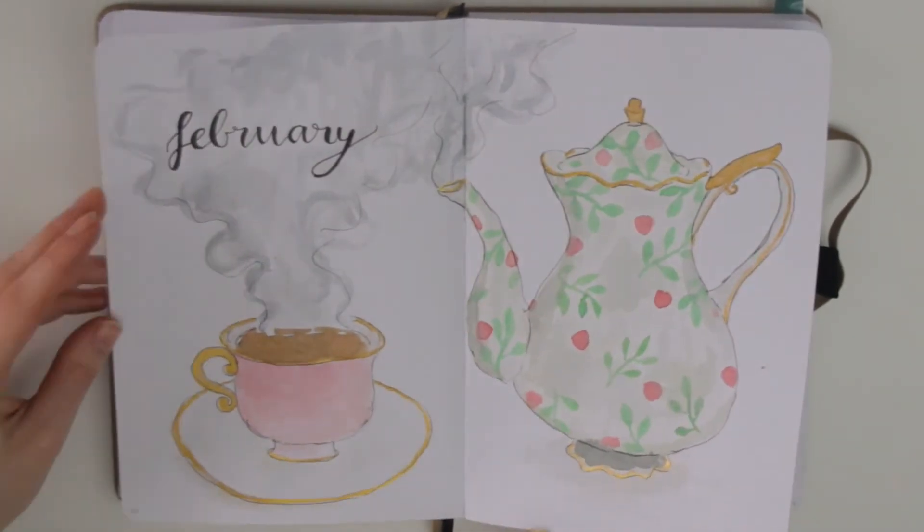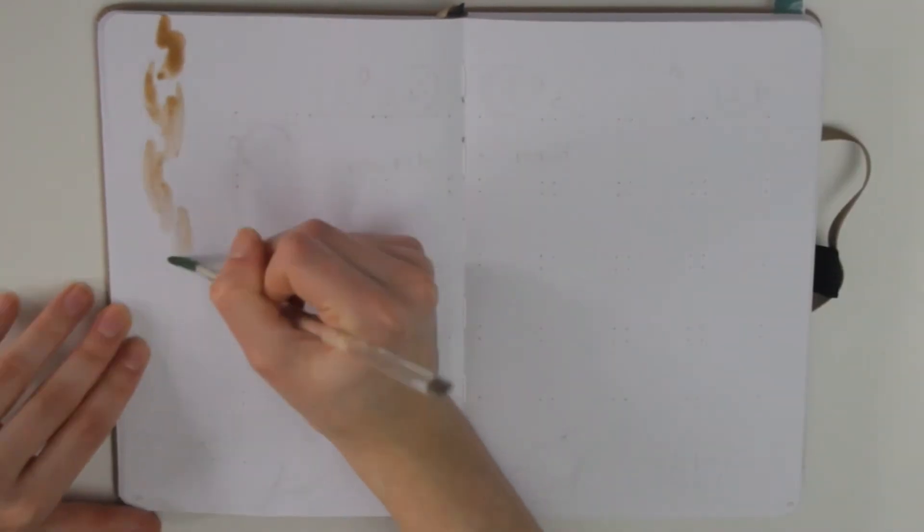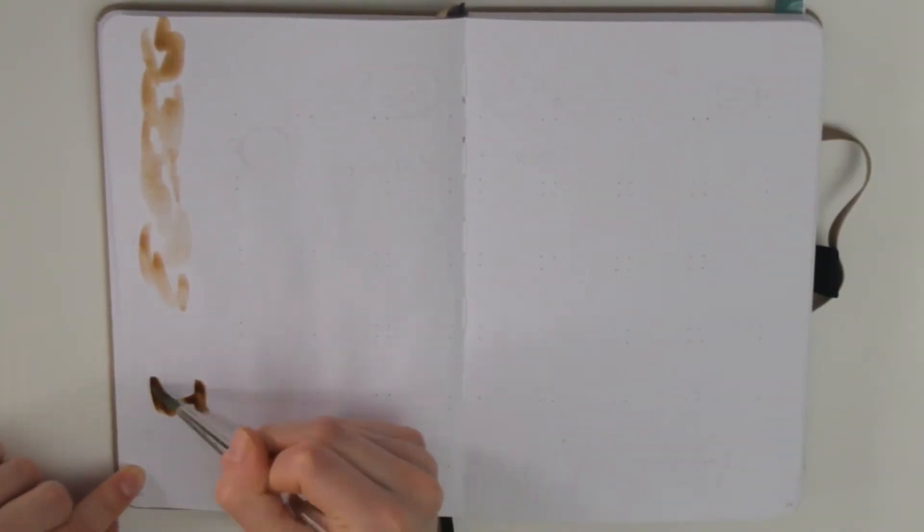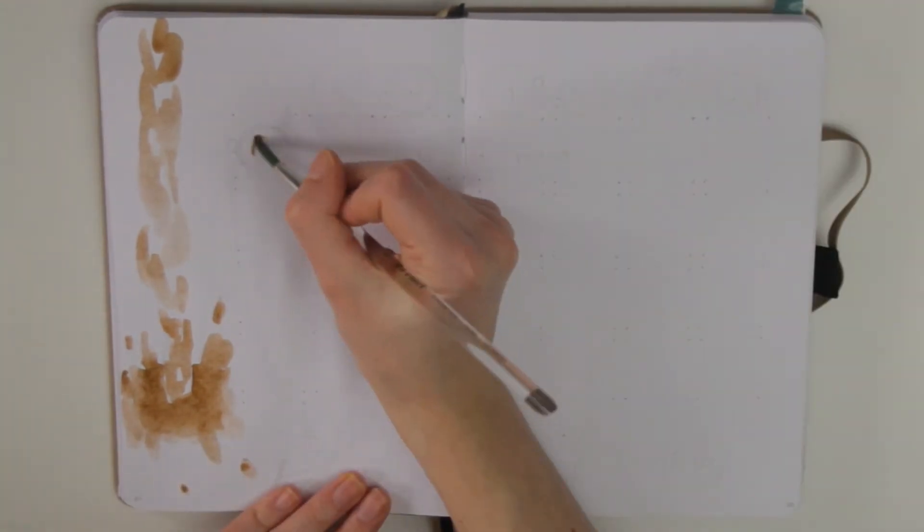And that was it for the cover page, so on to the next spread which is going to be the monthly overview as well as the mood tracker. And on the left I made tea being splashed into a cup which I think looks really really nice.